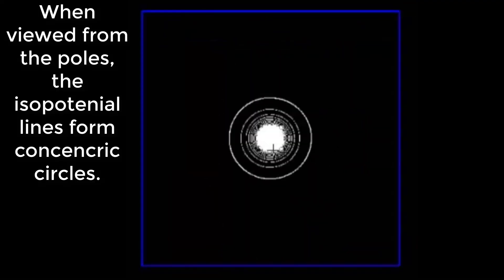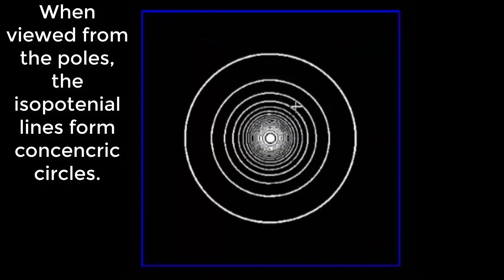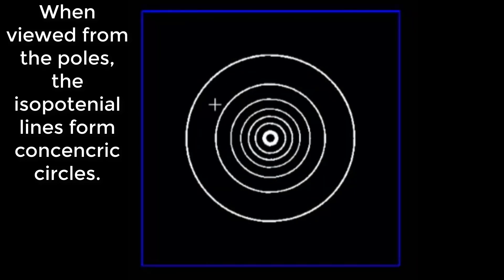When viewed from the poles the isopotential lines form concentric circles.